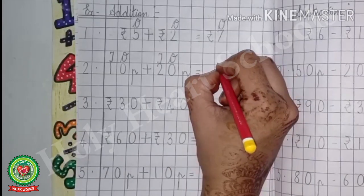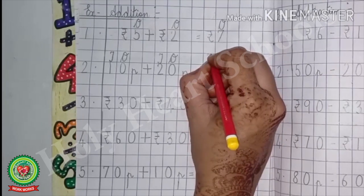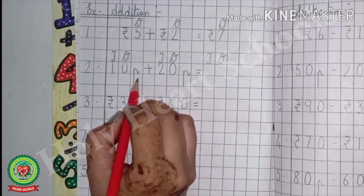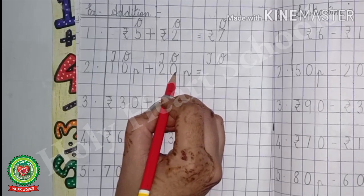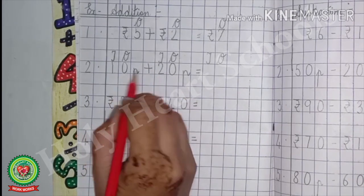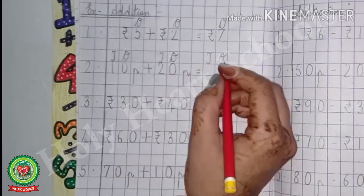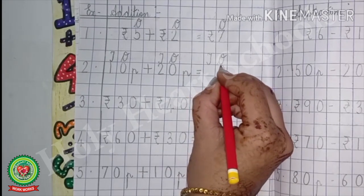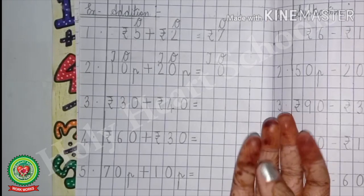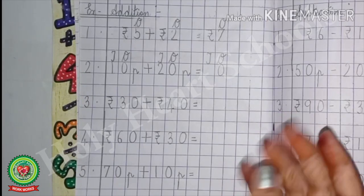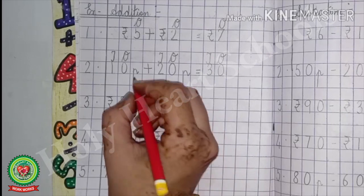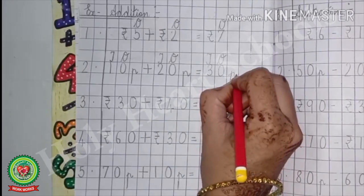Number 2: First, write the place value chart — 1s and 10s. In the answer, again write 1s and 10s. We will add 1s with 1s and 10s with 10s. Starting from the 1s side: 0 plus 0, the answer is 0 — write 0 under 1s. Now 1 plus 2: counting on from 1, we get 3 — write 3 under 10s. With that, write the unit, which is paisa.